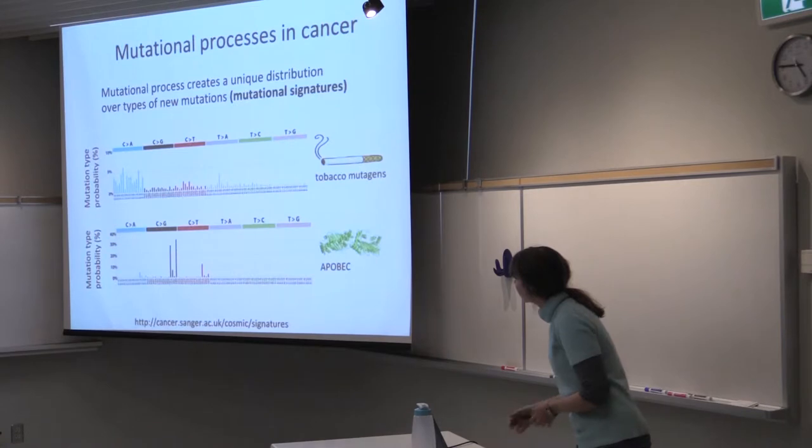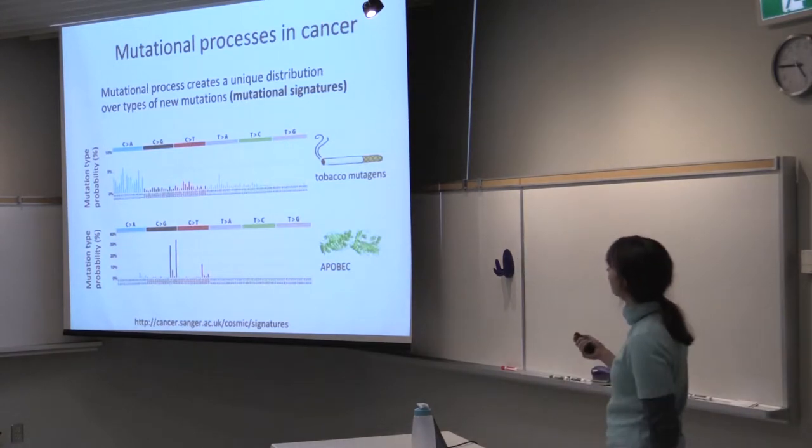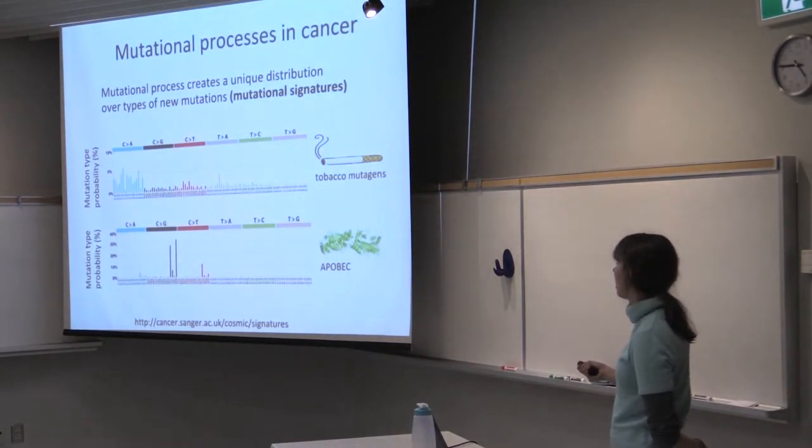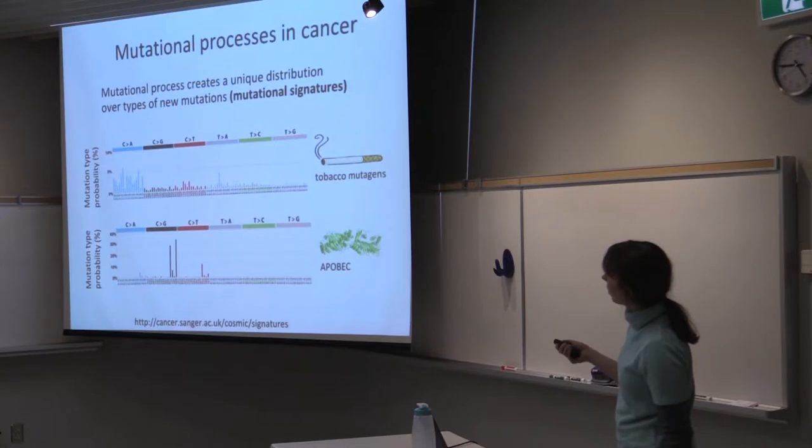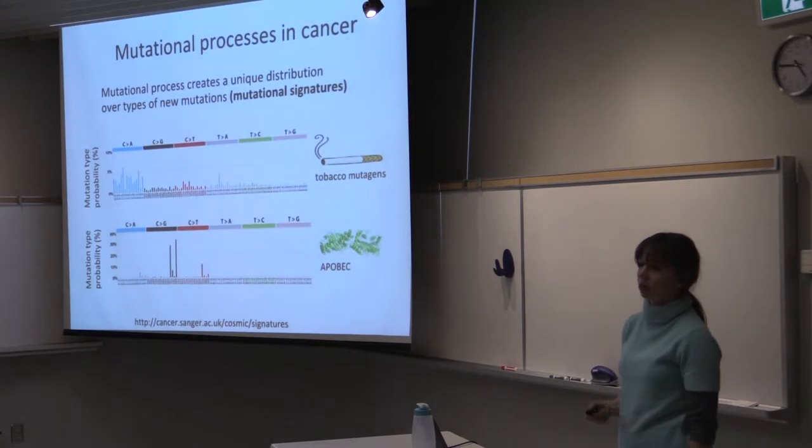Each of those sources produces a unique distribution over mutation patterns. Say, tobacco smoking produces mostly C2A mutations, and activity of APOBEC produces mostly C2G mutations. And we have seen both of these parts of the histogram in the lung cancer sample, but not in the breast cancer.